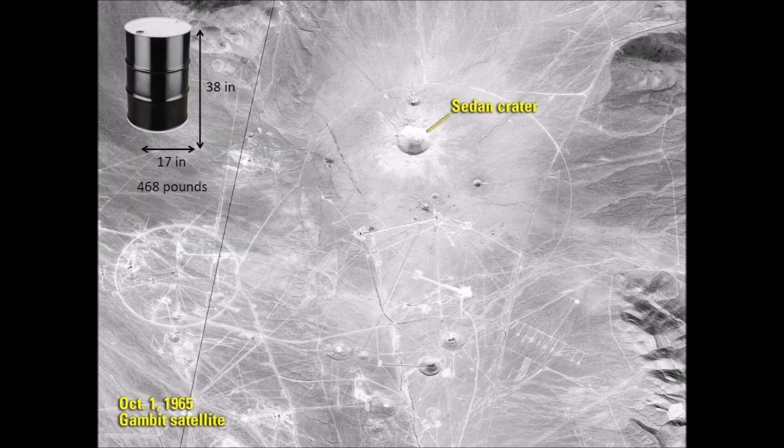The Sedan Crater was excavated by a nuclear bomb on July 6, 1962. The radioactive fallout from this test contaminated more U.S. residents than any other nuclear test. The bomb was a thermonuclear device with a fission yield of about 30% and a fusion yield of about 70%. It had a diameter of 17 inches, a length of 38 inches, and a weight of 468 pounds — approximately the size of a 55-gallon drum designed to fit inside the warhead of a Minuteman intercontinental ballistic missile.